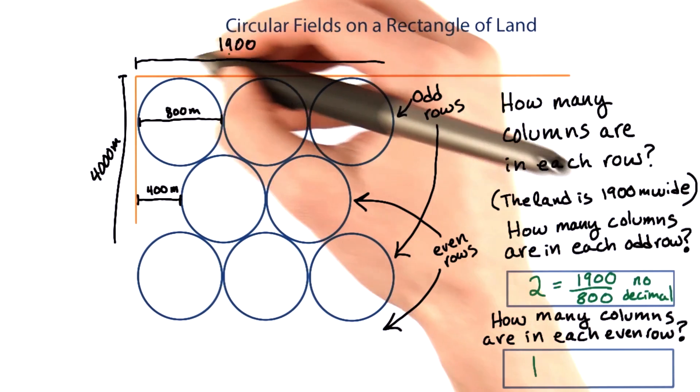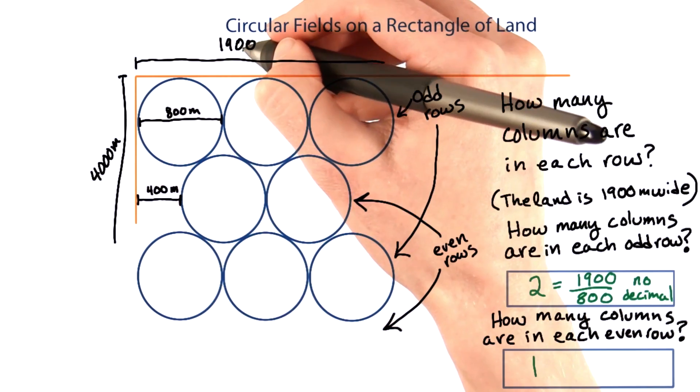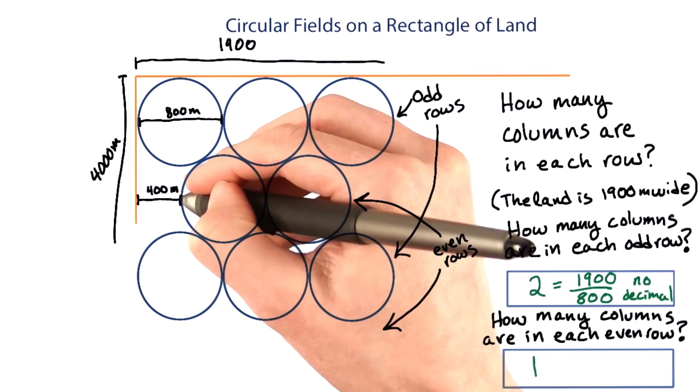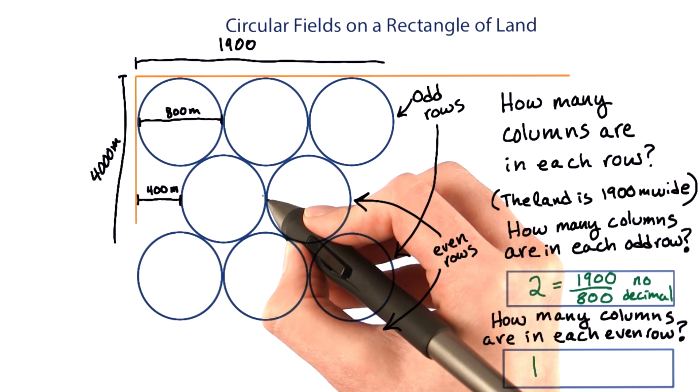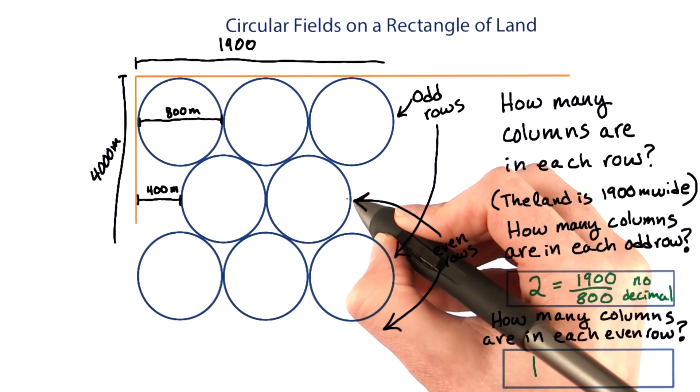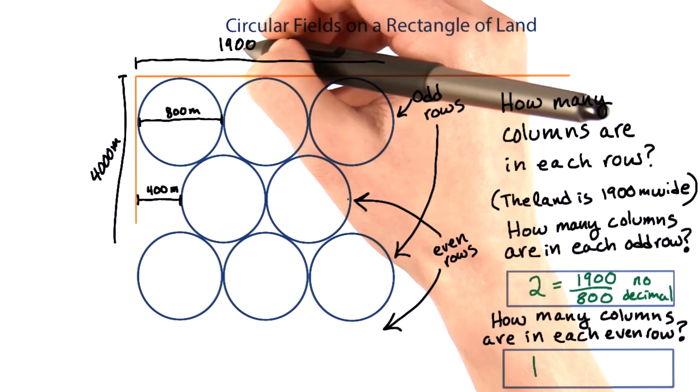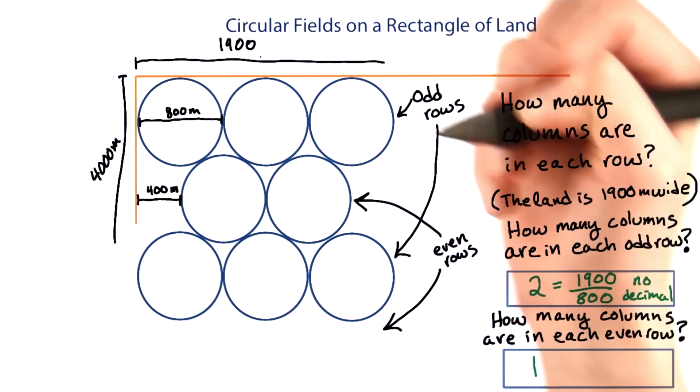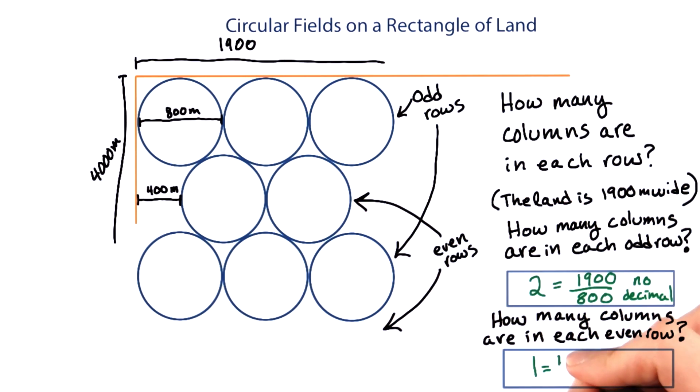In the even row, we subtract 400 from 1,900 because we can't use this first 400 meters. Then we can fit 800, and at this point we're at 1,200. If we add another 800, we would be at 2,000, but that's more than 1,900, so that wouldn't fit. That calculation was 1,900 minus 400 over 800, and then we drop the decimal.